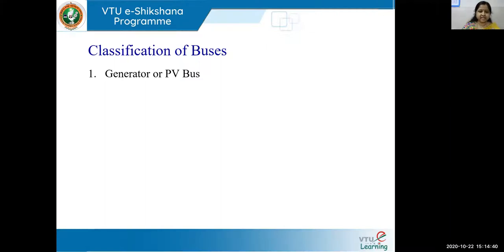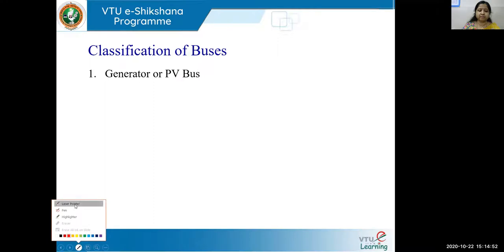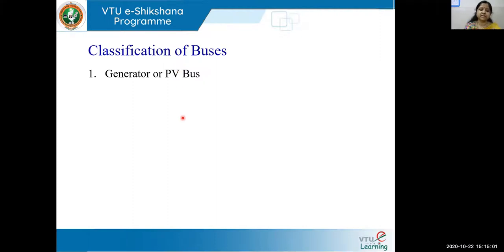In the generator bus, or PV bus, the two known quantities out of the four are P and V — that is, the real power and the magnitude of voltage. The generator bus is also called a voltage controlled bus. So you may call it the generator bus, PV bus, or voltage controlled bus.